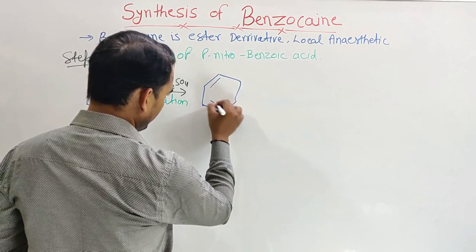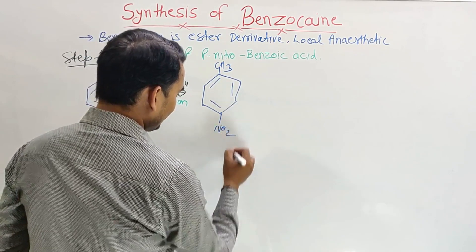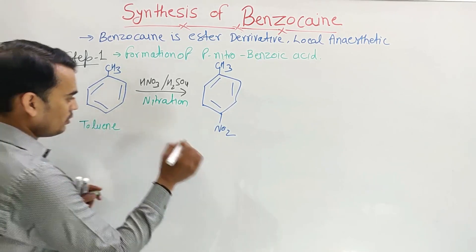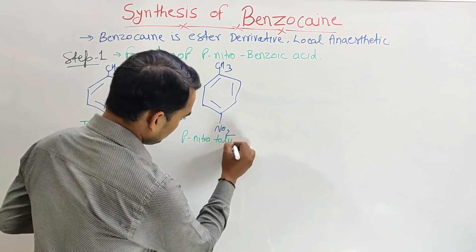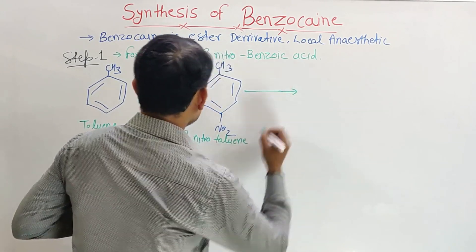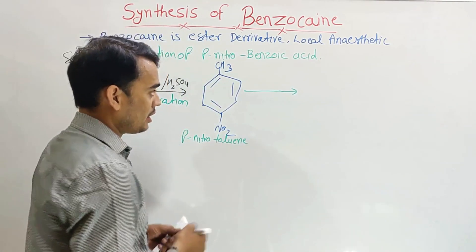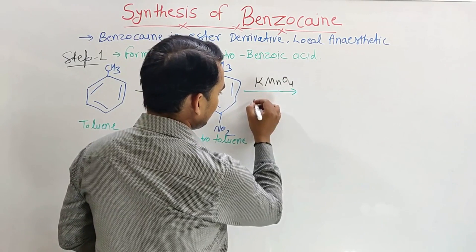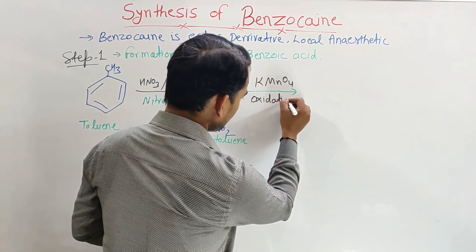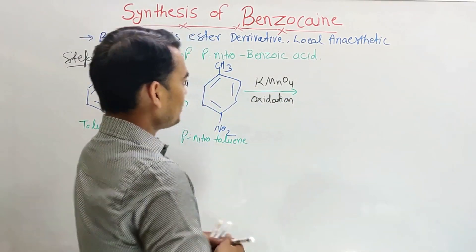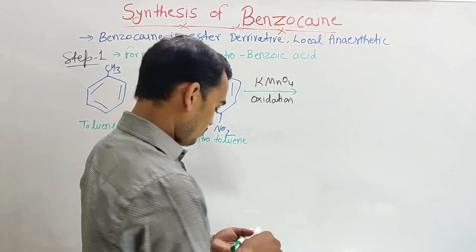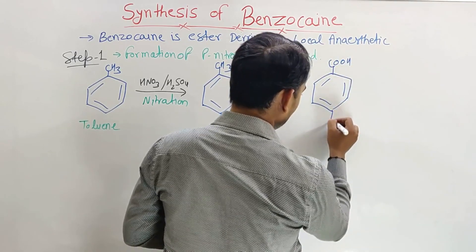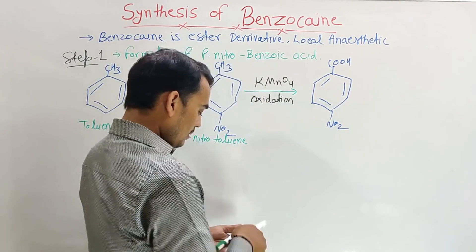Para nitro toluene has CH3 at one position and NO2 at the para position. Now this para nitro toluene undergoes oxidation, carried out with KMnO4 — potassium permanganate. By oxidation of para nitro toluene, the CH3 group will become a COOH carboxylic group, and the product we get is para nitro benzoic acid, with COOH at one position and NO2 at the other.